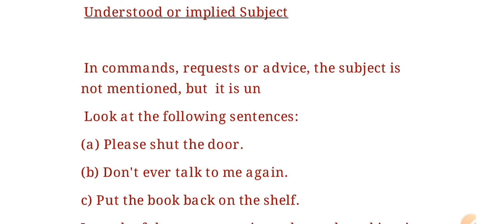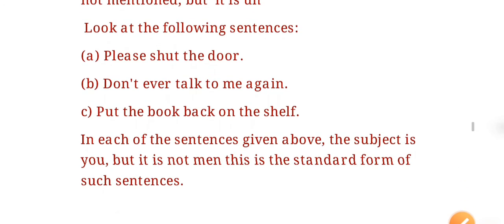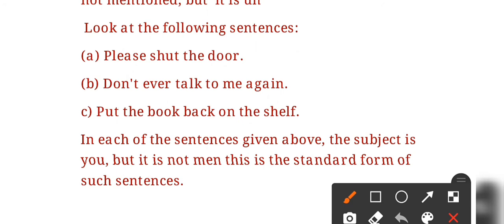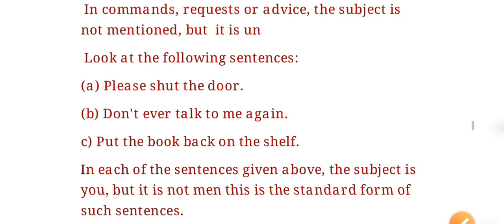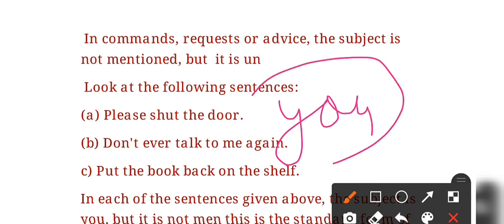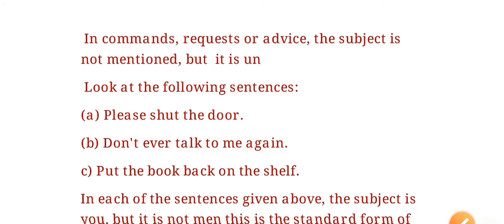In commands, requests, and advice, the subject is not mentioned but it is understood. This is called the implied or understood subject. For example, 'Please shut the door' — this is an imperative sentence. In imperative sentences, the subject is always 'you' and it is always hidden. 'Shut the door' means 'You shut the door' — the 'you' is understood.